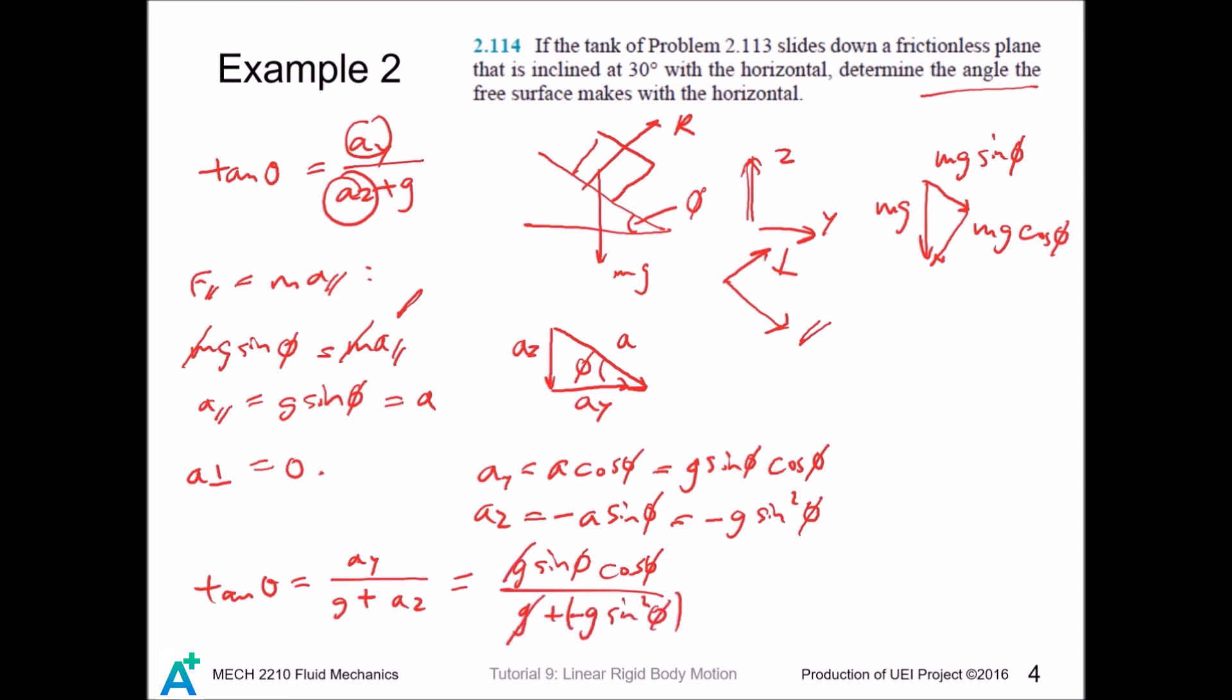But this is in fact cosine squared phi, so this cancels out and we're left with tangent phi. Therefore, theta equals phi. We conclude that the free surface is parallel to the inclined surface.